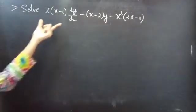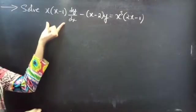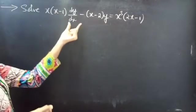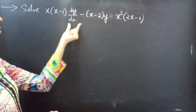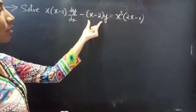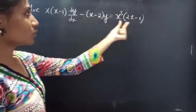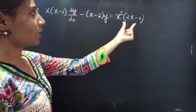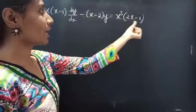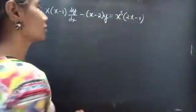Problem: solve x times (x minus 1) into dy/dx minus (x minus 2) into y equals to x cubed times (2x minus 1). Solution.